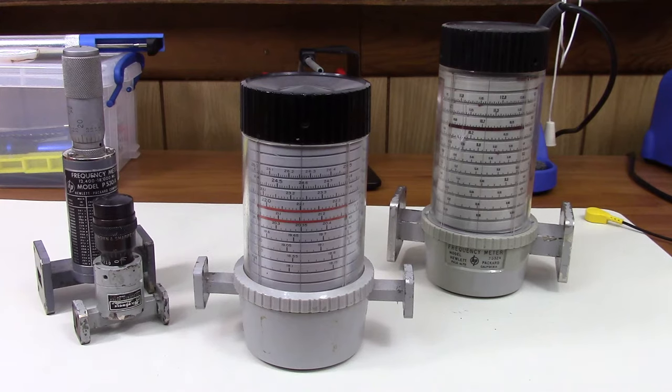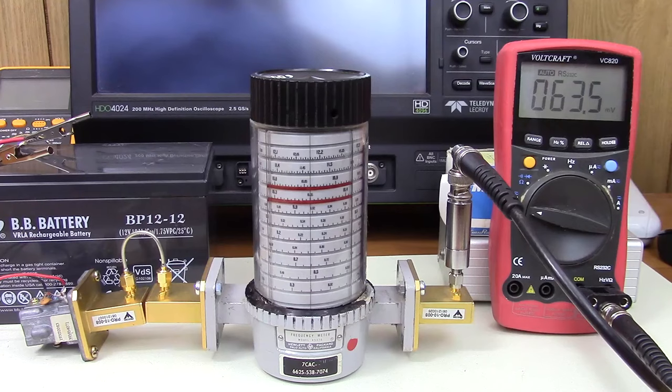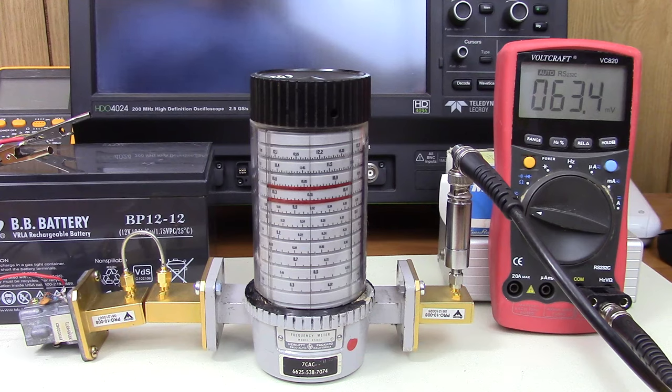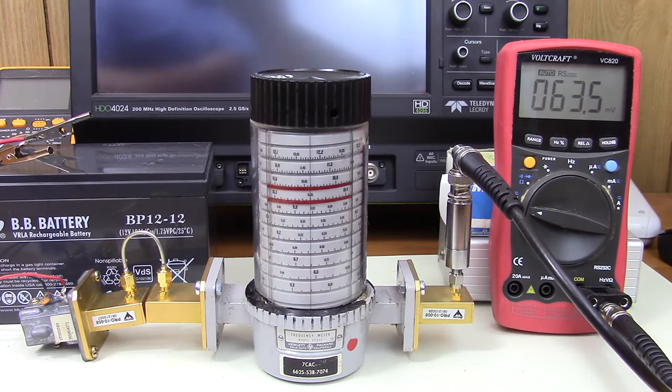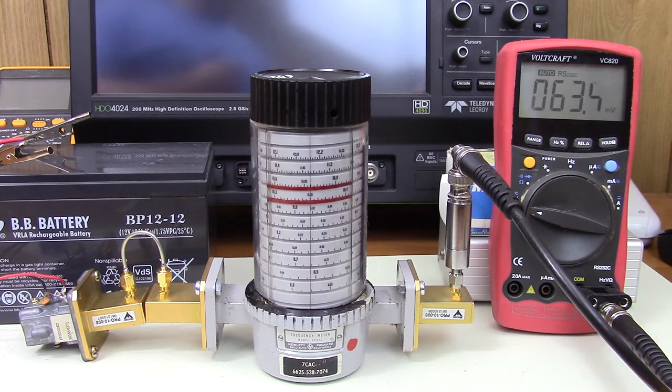This is a simple test setup just to show you how you can use a simple wavemeter. Here's our unknown frequency source, it's a 10 gigahertz gun plexer. I know it should be somewhere between 10.3 and 10.5 gigahertz.